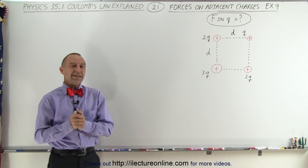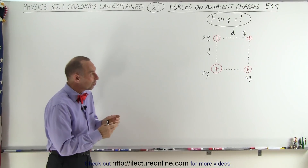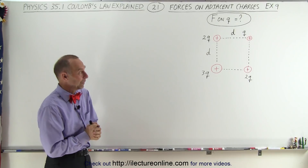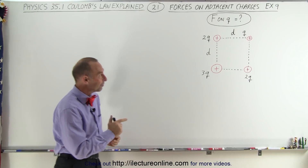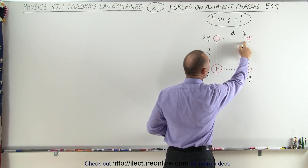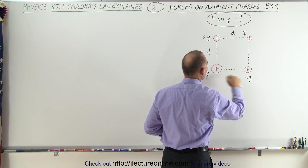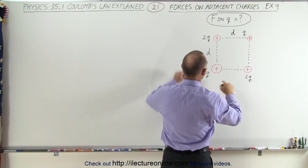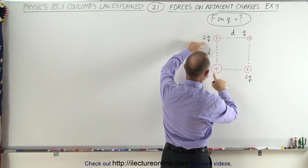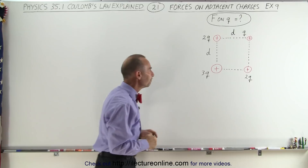Welcome to ElectronLine. Here we have four charges at the corners of a square, and we're trying to find the force on Q due to the presence of the other three charges. Notice that these have charge 2Q, and this one has charge 3Q.